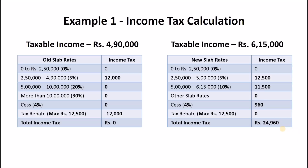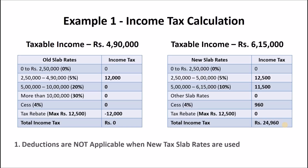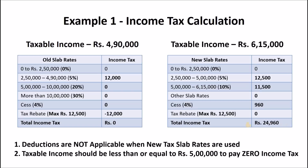So you pay an income tax of Rs 24,960 based on new tax slab rates, whereas you pay no income tax on income of Rs 6,15,000 when using old tax slab rates with deductions. You might wonder how higher tax slab rates result in zero income tax compared to the new reduced rates. It's because deductions are not applicable under the new reduced tax slab rates, making it difficult to reduce your income tax. From this example, we learn that we should try to get our net taxable income below Rs 5 lakhs to pay zero income tax, which is achievable using old tax slab rates with investments.